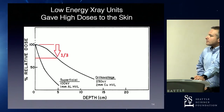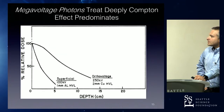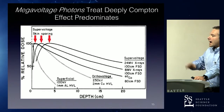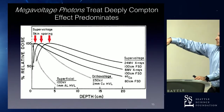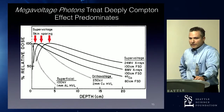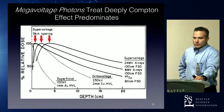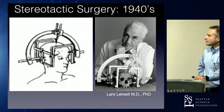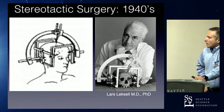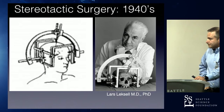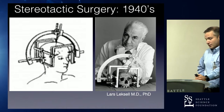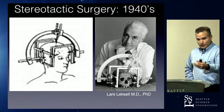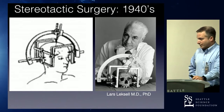Once you get to higher-energy x-rays, you get skin sparing — the dose goes up and then comes down, which is very useful. We need a high enough energy that we're not overdosing the skin. This transition to higher-energy machines was critical for modern radiation therapy.